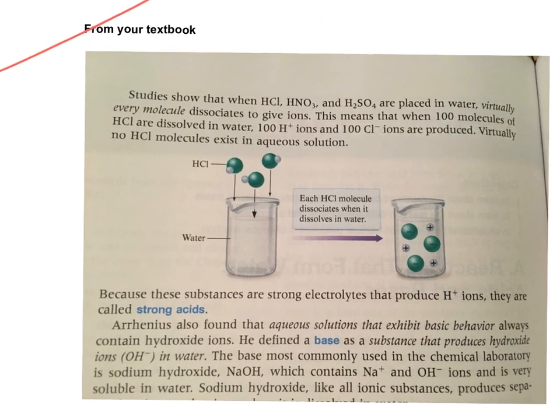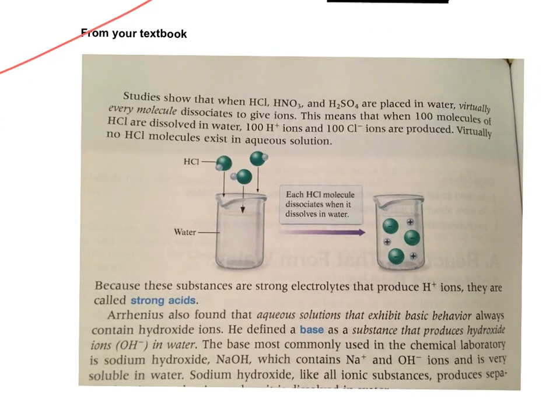Okay. Lastly associated with today, I'm going to have you read from the textbook and lo and behold, they're using the same example. They're using the HCl again. And so what they're indicating here is, and they list some other acids as well, nitric acid and sulfuric acid. When these are placed in water, virtually every molecule dissociates to give ions. Now they go a little bit off track from what we're looking to do. They said, this means when a hundred molecules are dissolved in water, you get a hundred H plus ions and a hundred Cl minus ions.